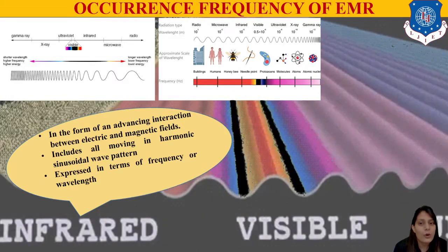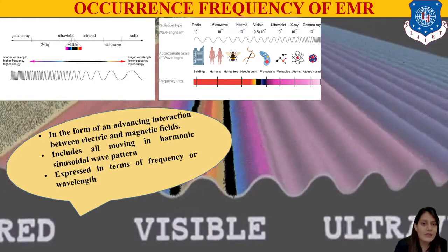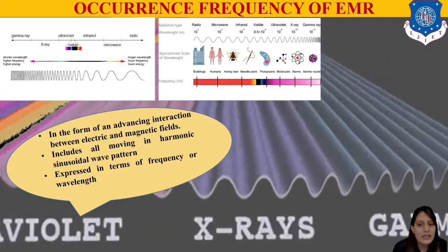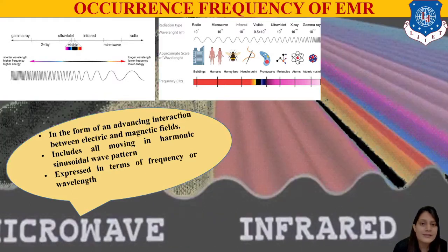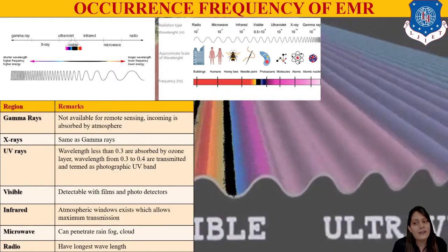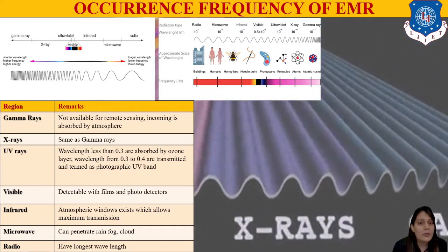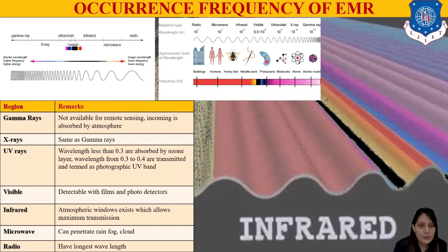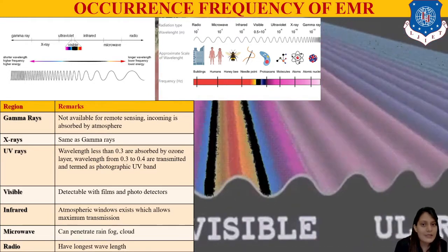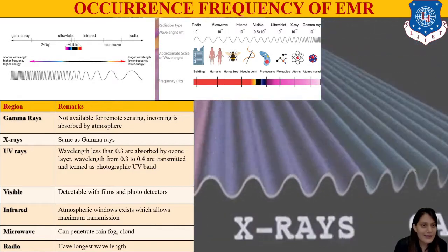In the electromagnetic spectrum, radiation types include radio, microwave, infrared, visible, ultraviolet, X-rays, and gamma rays. You can see an approximate scale of wavelengths compared to objects like buildings, the human body, a honeybee, and a needle point — all having different wavelengths. Gamma rays are not available for remote sensing as they are absorbed by the atmosphere. X-rays are similar, and UV wavelengths less than 0.3 micrometers are absorbed by ozone.